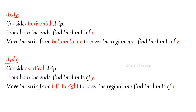Before that, you should remember these things: dx dy means horizontal strip. You have to always consider dx dy as a horizontal strip. Find the limits of x, then move the strip from bottom to top and find the limits of y. Similarly, if it is dy dx, then consider a vertical strip. From both ends find the limits of y and move the strip from left to right to cover the region and find the limits of x.